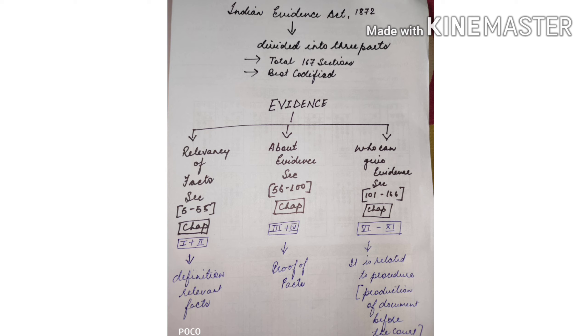The Indian Evidence Act 1872 is divided into three parts, in which a total of 167 sections are given, and it is called the best codified law.